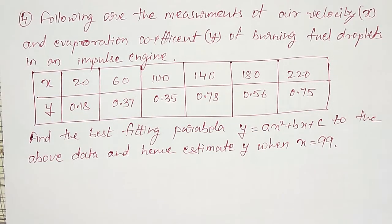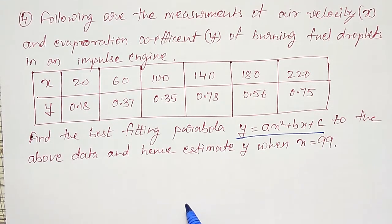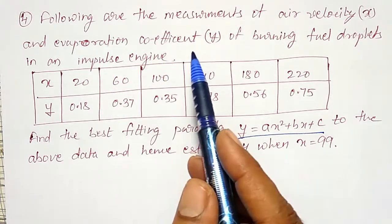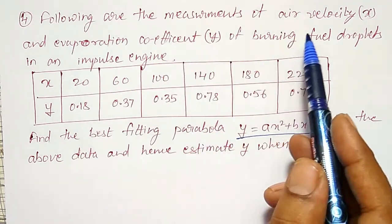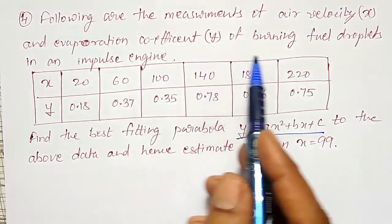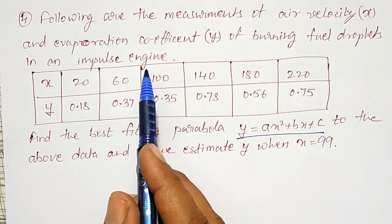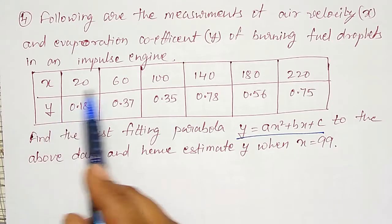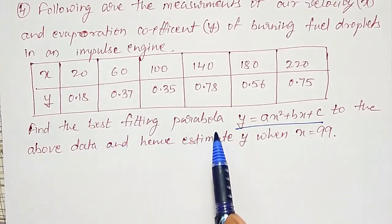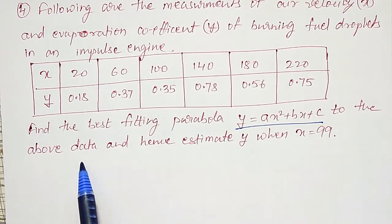We are going to solve here using the step deviation method on fitting of a parabola y = ax² + bx + c. The measurements of air velocity as x and the operation coefficient y of burning fuel droplets in an impulse engine as y are given. Find the best fitting parabola y = ax² + bx + c to the above data and hence estimate y when x = 99.